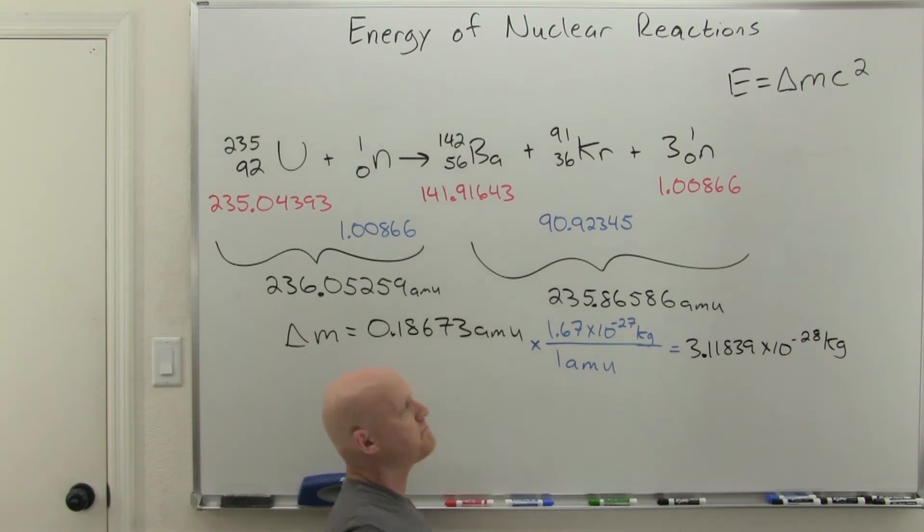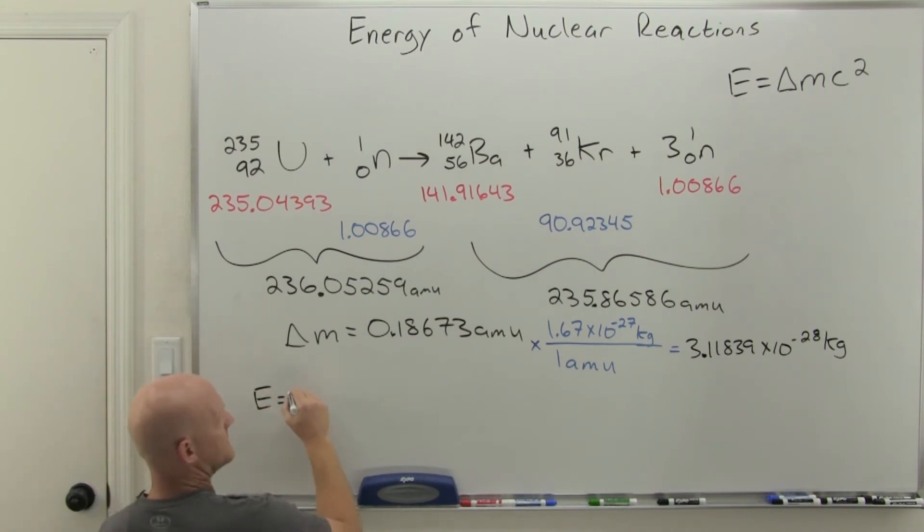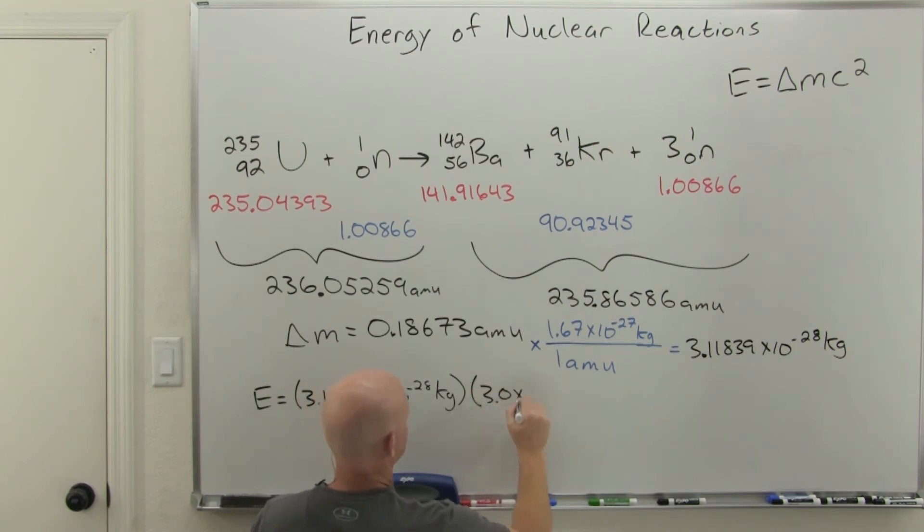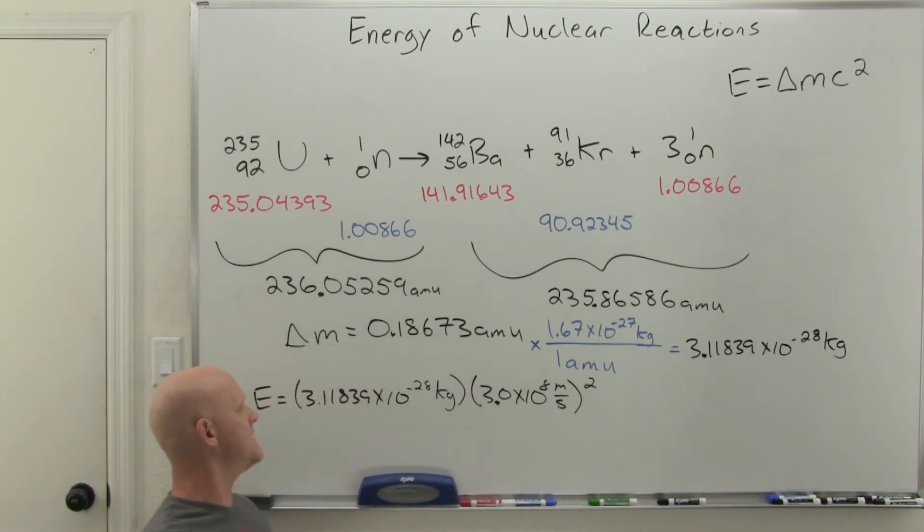That's what we're going to plug into E equals mc squared. We're going to have E equals 3.11839 times 10 to the negative 28 kilograms times 3.0 times 10 to the eighth meters per second squared.